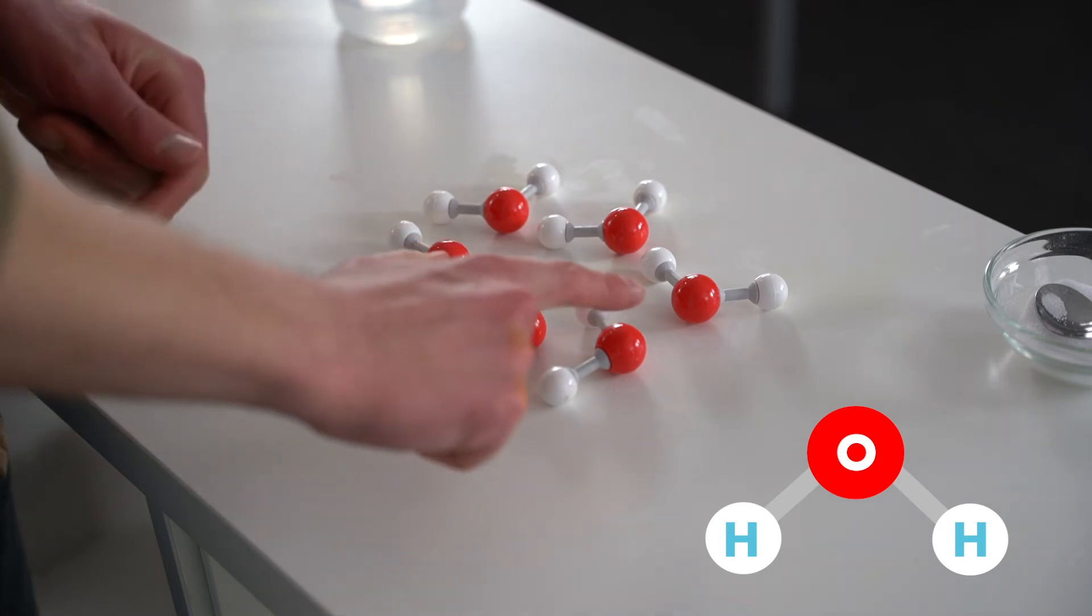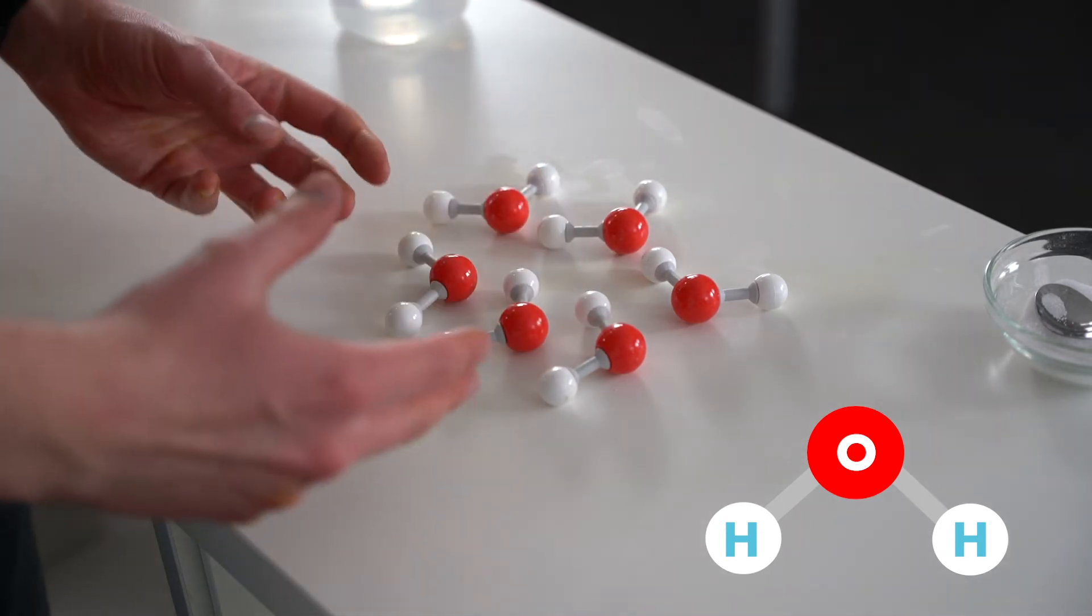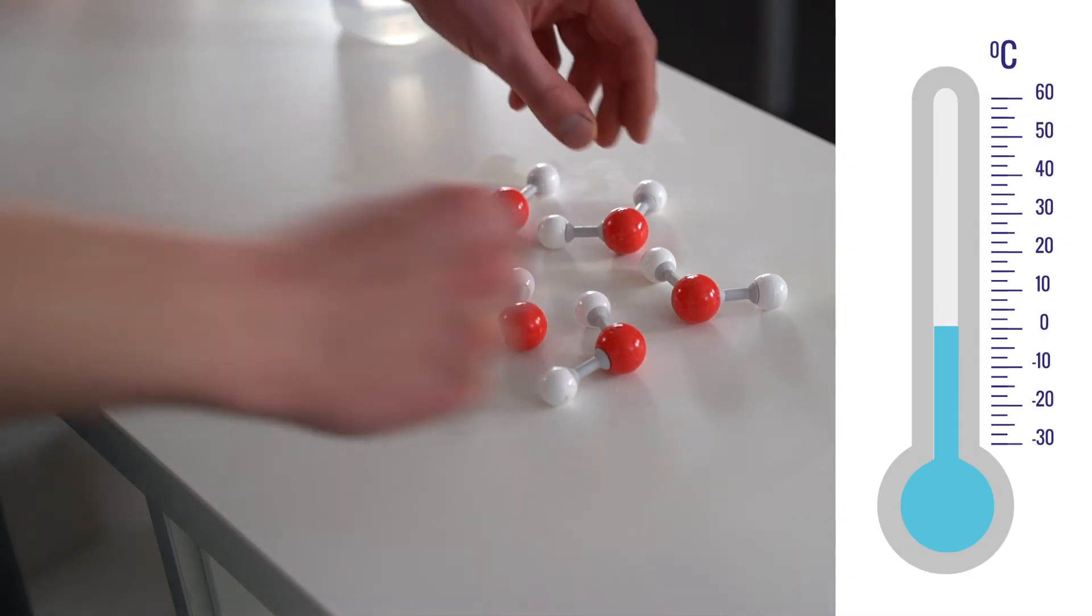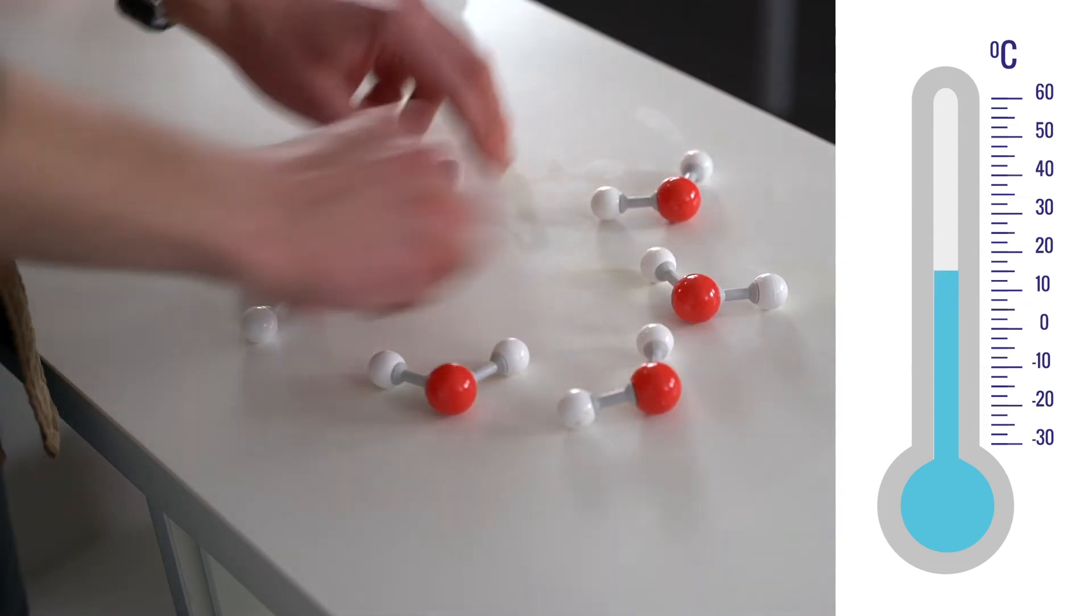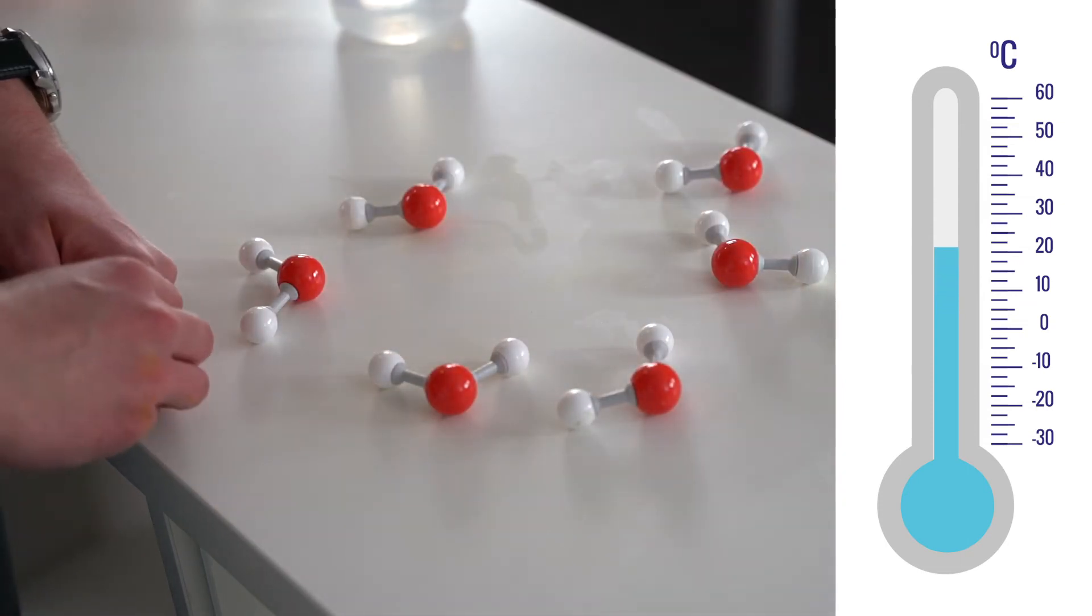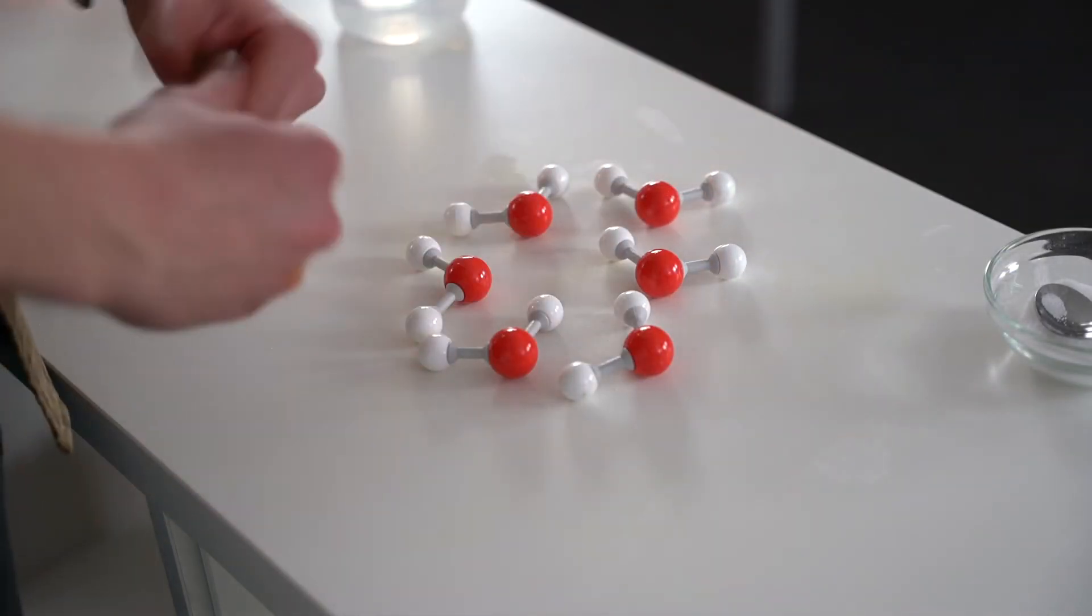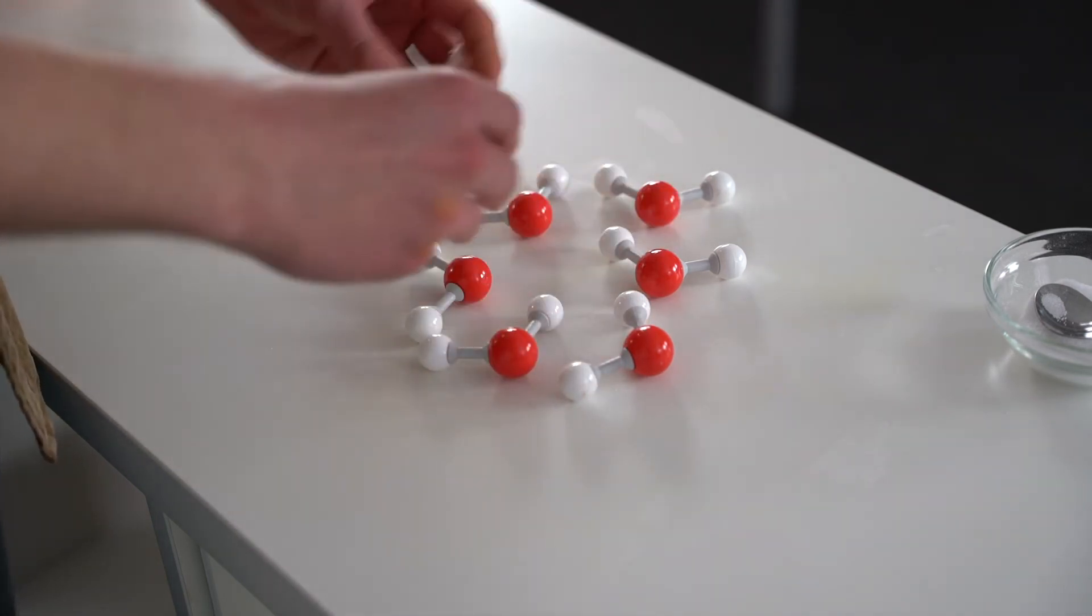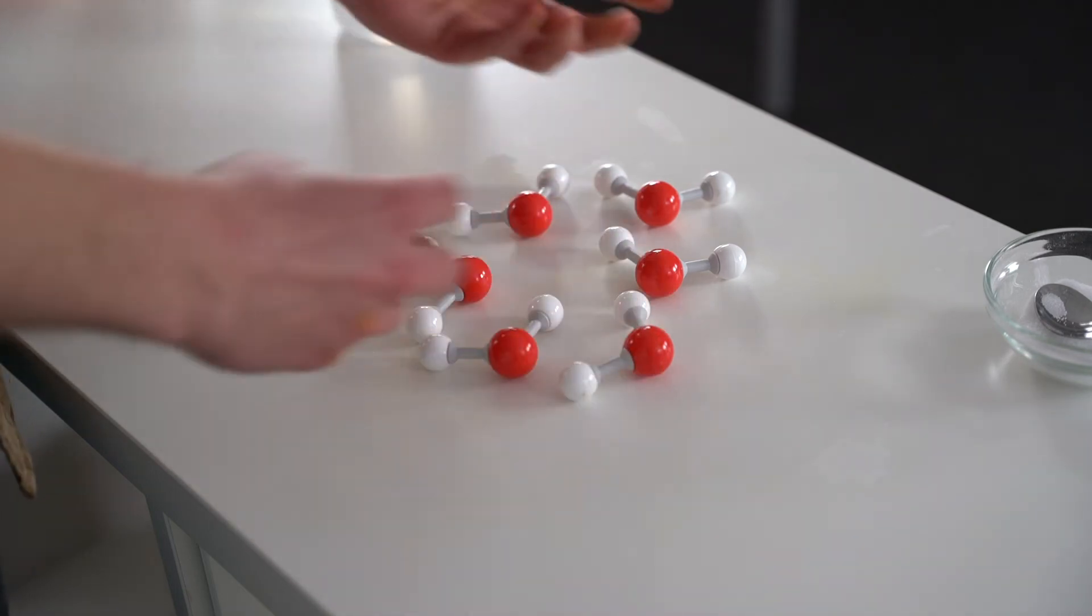So here we have our water molecules, our H2O molecules, and when they are in a solid ice formation, they are a lot more closely packed together. But when the temperature starts to rise and goes above zero degrees, they will start to become a lot more spread out because they're water. They are liquid. Remember we said that at zero degrees and above, the ice will melt, and at zero degrees and below, water will start to freeze. And we have that sort of equilibrium point where both are happening at the same time.